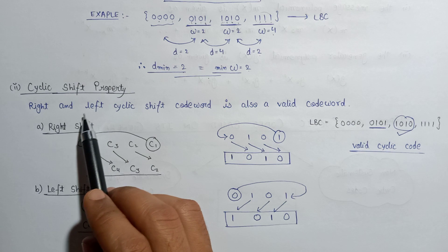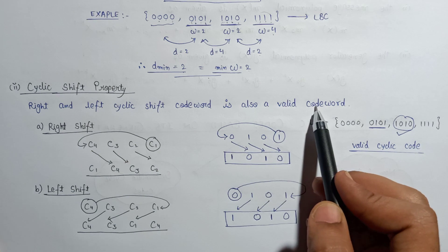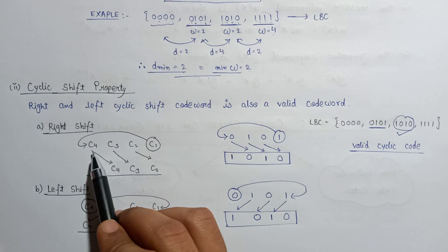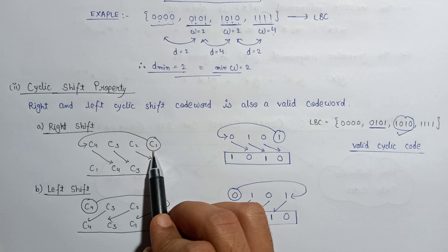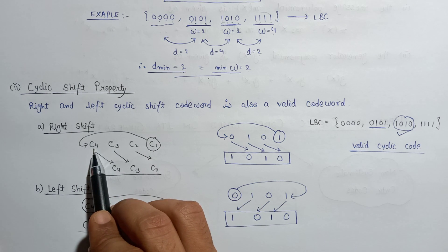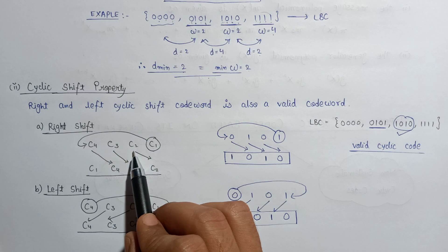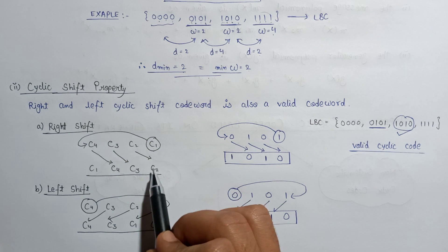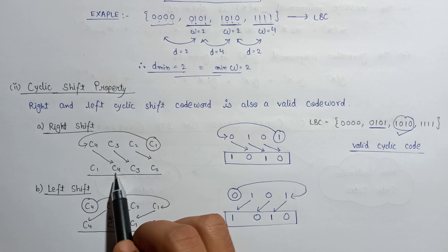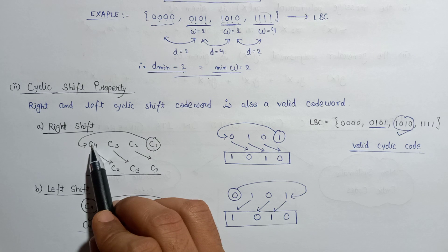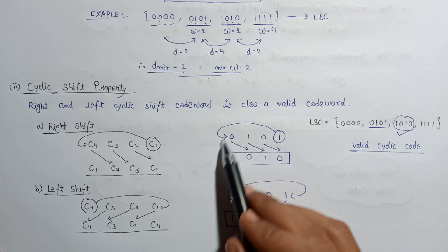The cyclic shift property states that both the right and left cyclic shift of a codeword is also a valid codeword. For right shifting, given bits c1, c2, c3, c4 — c2 moves to the position of c1, c3 moves to c2, c4 moves to c3, and c1 wraps around to the position of c4.